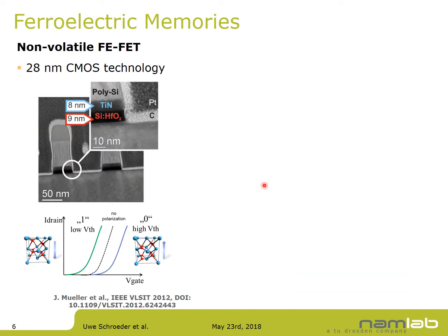This can be seen in the Global Foundries demonstration, where they replaced the hafnium-oxide-based gate dielectric in a 28-nanometer high-performance transistor with ferroelectric hafnium oxide. You can see a clear shift in the threshold voltage of the transistor for the two different polarization states, with a difference on the order of one volt.